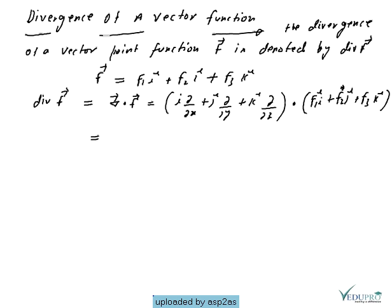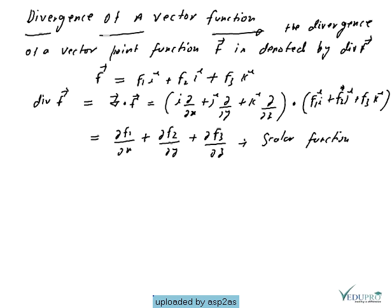Using the property that i·i = 1, j·j = 1, k·k = 1 and all cross terms equal zero, the divergence becomes del-f1/del-x plus del-f2/del-y plus del-f3/del-z. This means if we take the divergence of a vector quantity, we get a scalar function.